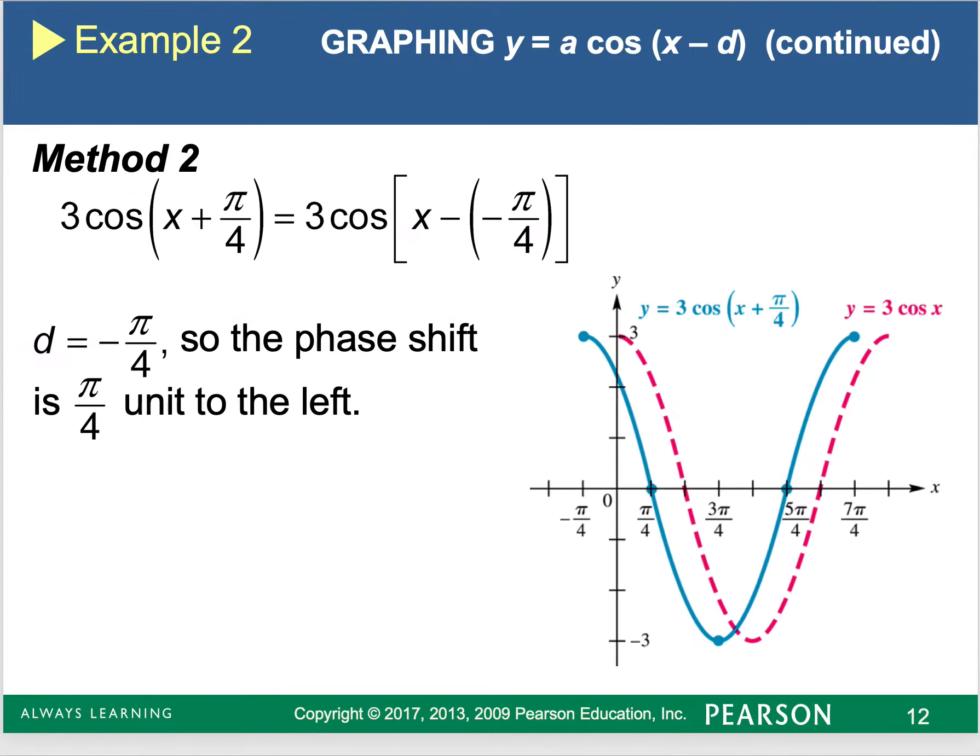However, like I said before, we can also do the phase shift. So we're going to graph it just like normal, going through our typical five points, and move each individual point over that π over four. Again, either way.